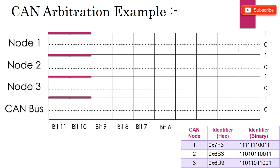At 9th bit, node 1 will send a recessive bit. But due to node 2 and 3 sending dominant bit, the bus state will remain at dominant. Here node 1 has lost the arbitration and stops sending further bits.